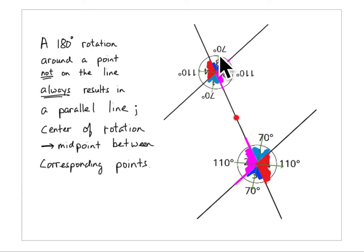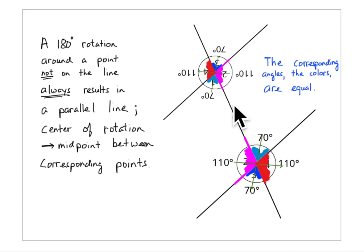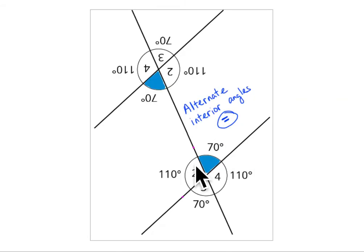The two angles on each side have to add to 180 — they have to form a straight line. The corresponding angles by color are equal: this angle here is equal to this angle, because it rotated 180 degrees and landed right here. The size didn't change — it went through a rigid transformation, which means nothing changes, the angles don't change size. This angle up here rotates and lands right here — it's equal. Everything is equal, so these are alternate interior angles.